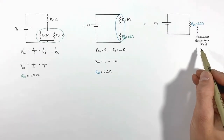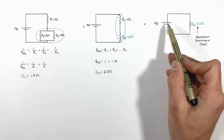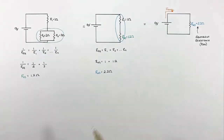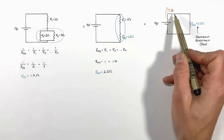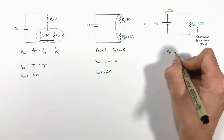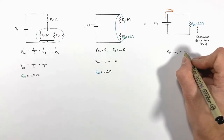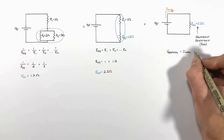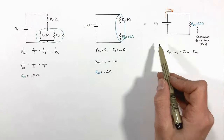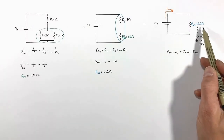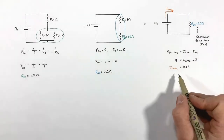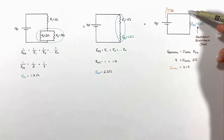Now that we know the equivalent resistance, we can continue to analyze this circuit by solving for the current coming out of the battery. We can use Ohm's law, where the voltage of the battery equals the total current multiplied by the equivalent resistance. Knowing the battery voltage is 9 volts and the equivalent resistance is 2.2 ohms, we find the total current coming out of the battery is 4.1 amps.